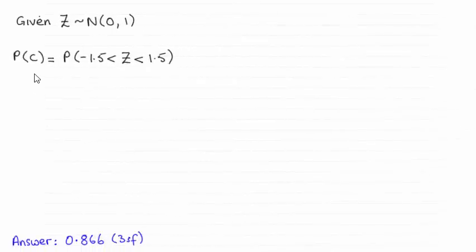Hi. Now for this part of the question, we're asked to work out the probability of C, which was the event that Z lies between minus 1.5 and 1.5. And as you can see, the answer is 0.866 to three significant figures.